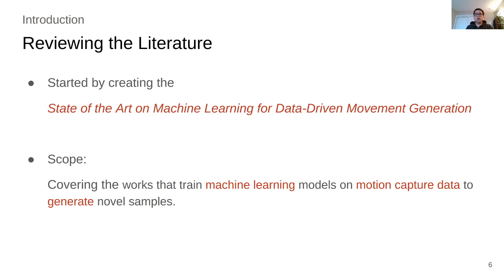As we started our research on movement generation models, we realized that the research community lacked a comprehensive review of this fast-evolving field of machine learning-based movement generation. So we started our research by writing such a review of the state of the art. We set the scope of our review on studies that train machine learning models on motion capture data to generate novel samples. As a result, we exclude non-generative data-driven works such as blending motion clips or motion graphs, and we also do not cover physics-based or hybrid methods.